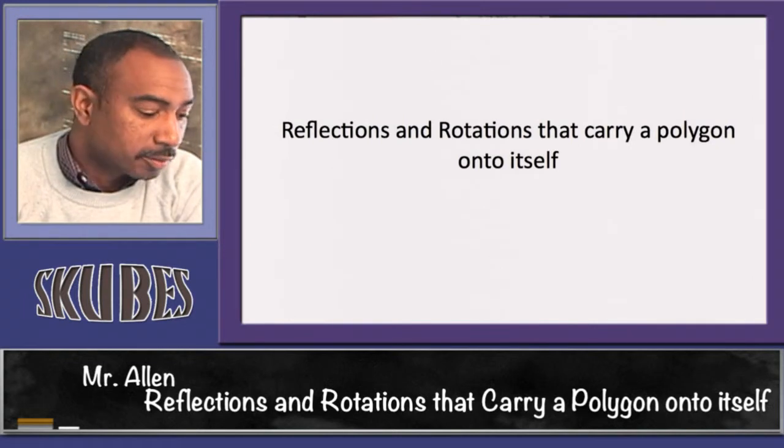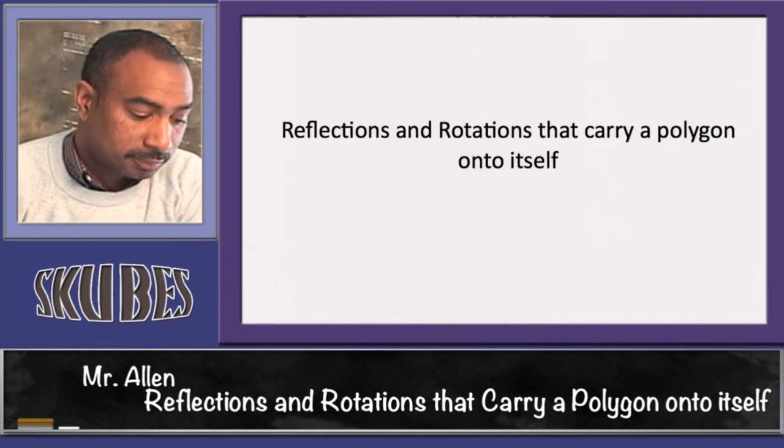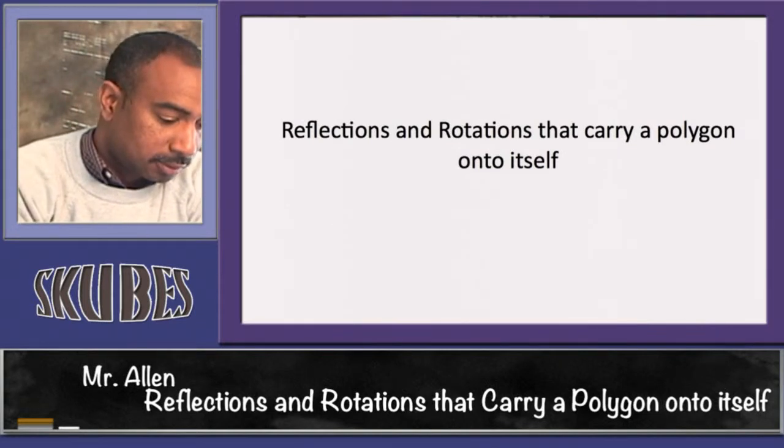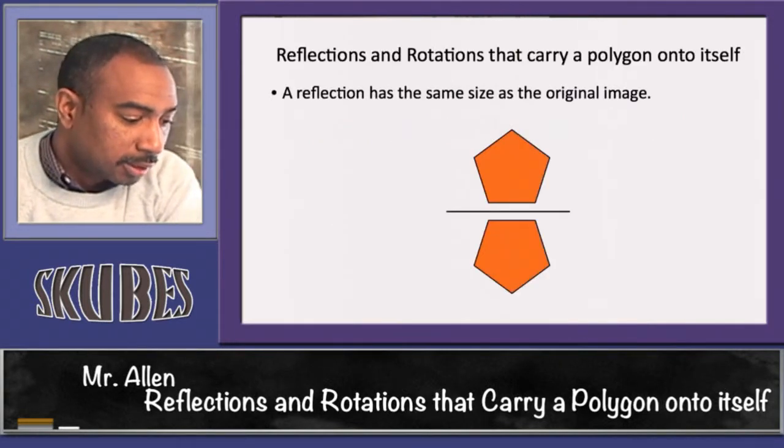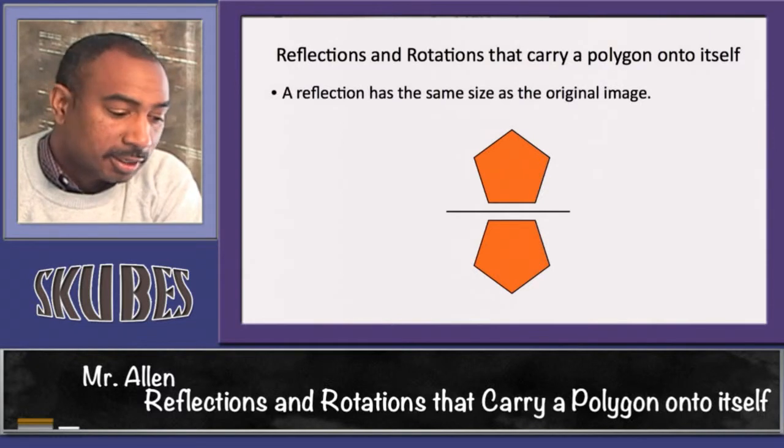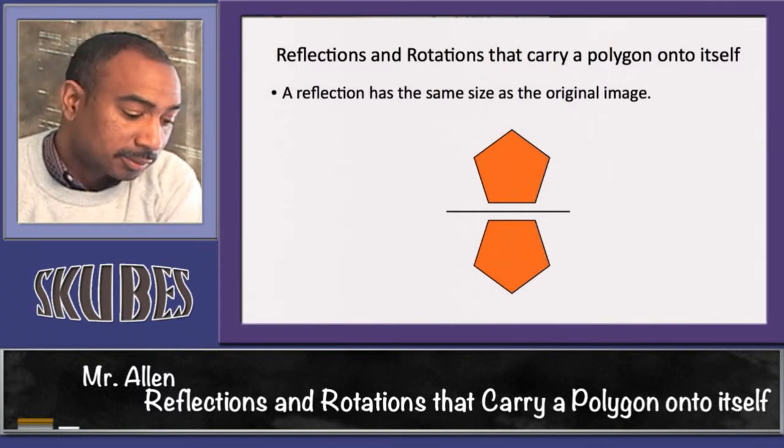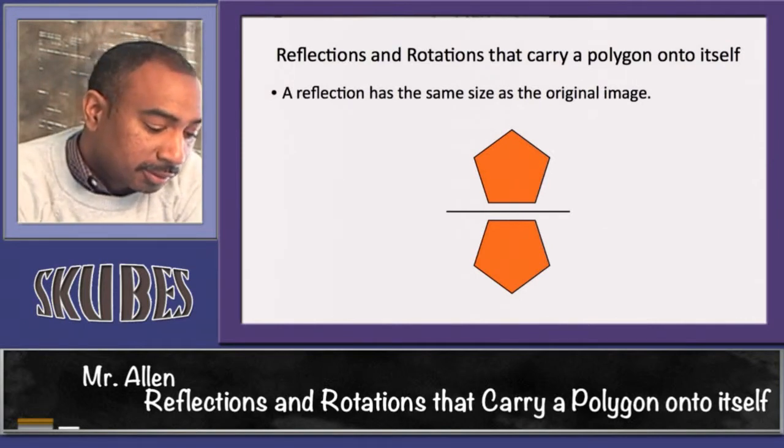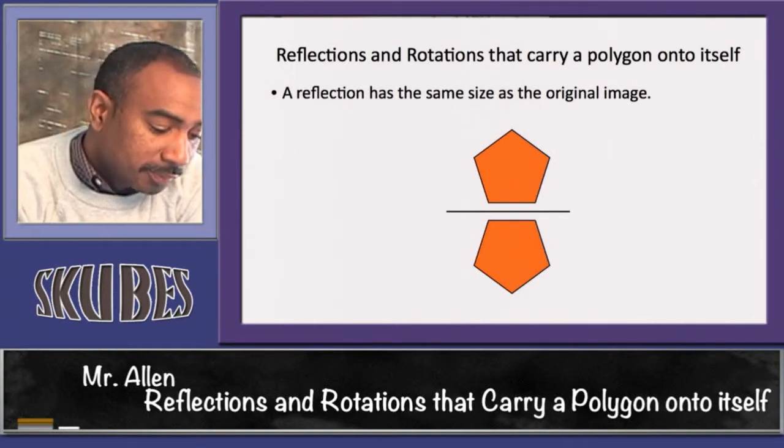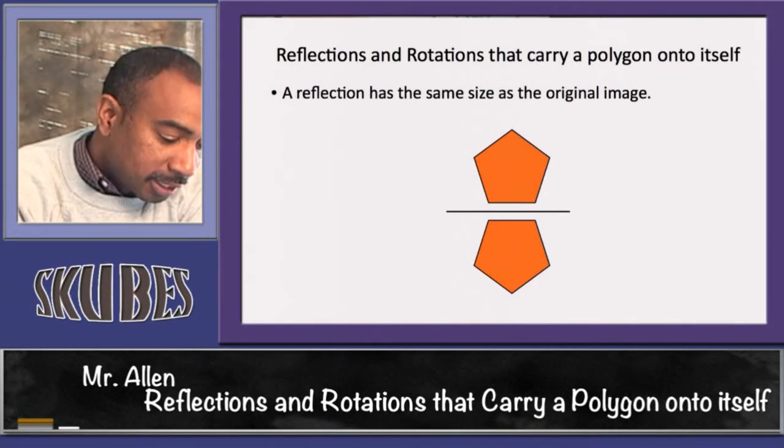Okay, today's lesson is on reflections and rotations that carry a polygon onto itself. A reflection has the same size as the original image. For example, this pentagon reflects across this line of symmetry, but the sizes are going to be the same.